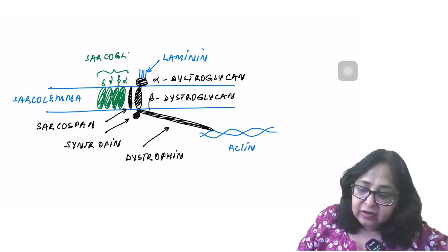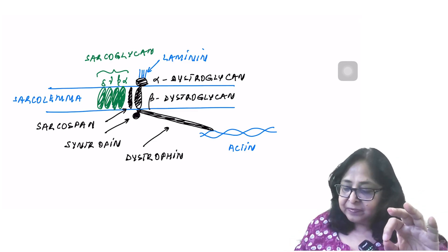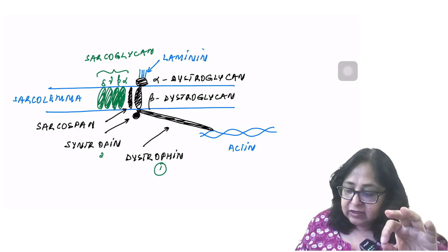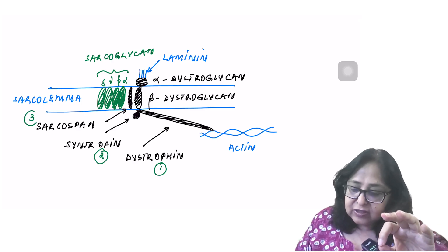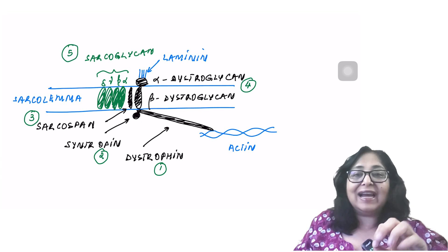So these are your sarcolemma proteins, five of them. Which are these? Dystrophin, syntropin, sarcospasm, distroglycan, and sarcoglycan.